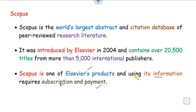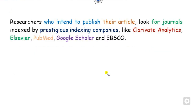It is one of the Elsevier products, and utilizing its information requires a subscription and payment. If your university has subscribed to Scopus, you can utilize its features very well. As a researcher publishing articles, you always look for journals that are well-reputed and have indexing in major databases like Elsevier, PubMed, Google Scholar, and others.